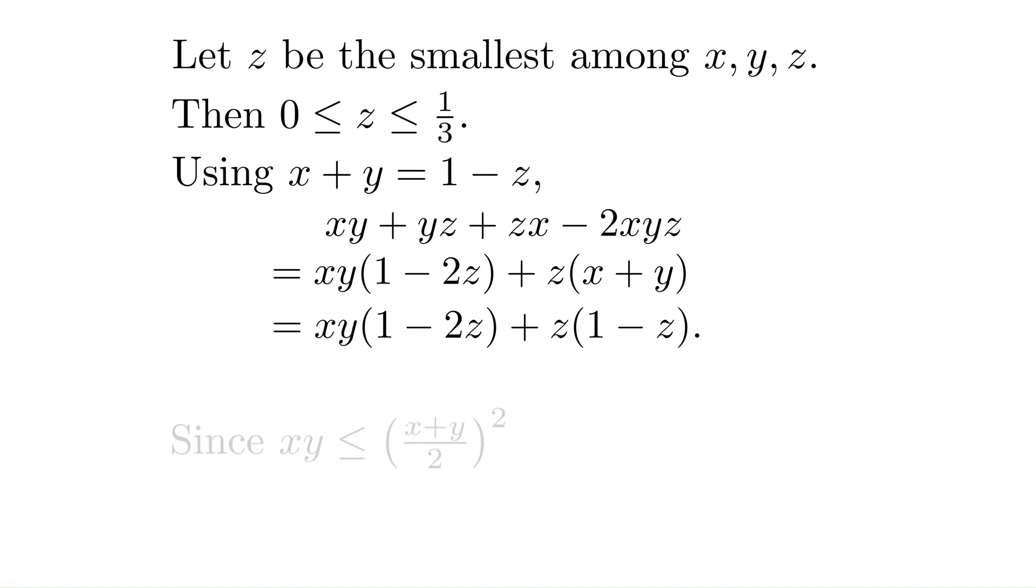This is where the arithmetic-geometric inequality comes in. The AM-GM inequality says that the square root of xy is less than or equal to x plus y divided by 2. If we square both sides, we get xy is less than or equal to x plus y divided by 2 squared. And we replace x plus y with 1 minus z. Now, we establish an inequality for xy as an expression in z.